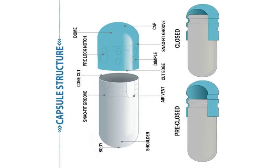If we have a look at different parts of the capsule we can see that it has a dome shaped cap and a body. In both cap and body there are snap fit grooves and in the cap there is pre-lock notch and dimples.